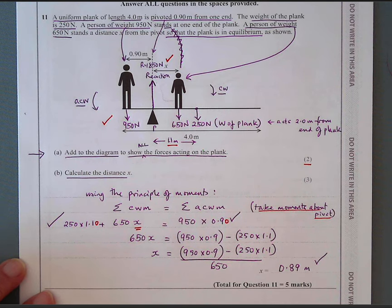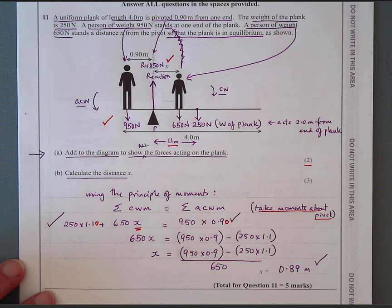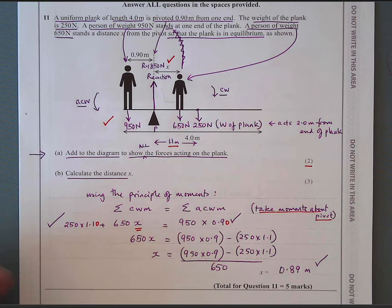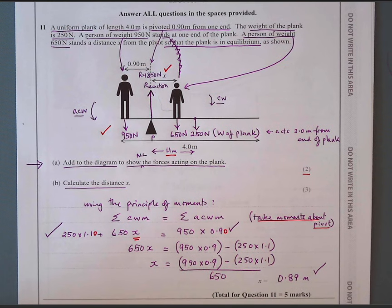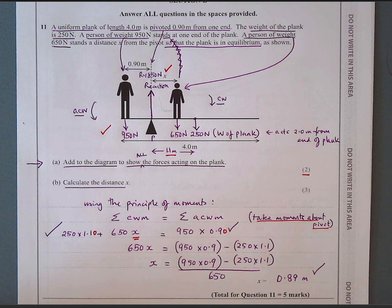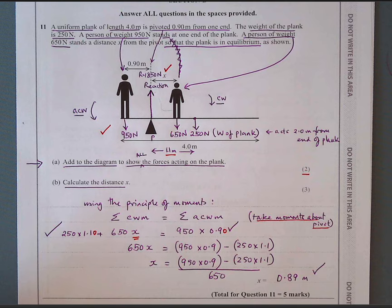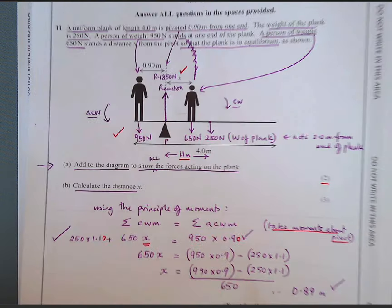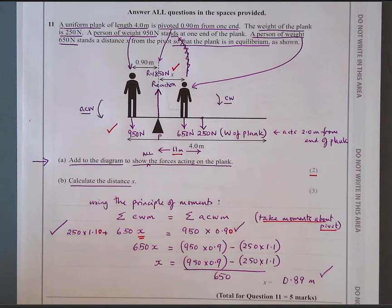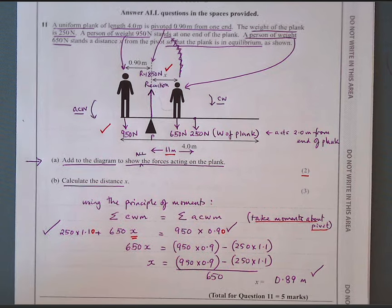This question is about conditions for equilibrium. Remember there are two conditions: one, the resultant forces in any direction must be zero; and two, the sum of the moments about any point must also be balanced — the sum of moments, positive and negative, must add to zero. That's question 11 done.